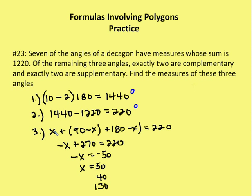I know I have one angle, call it x, another angle that's supplementary to this angle (90 minus x), and another angle that's complementary to the angle (180 minus x). So I have x plus (90 minus x) plus (180 minus x) equals 220 degrees.